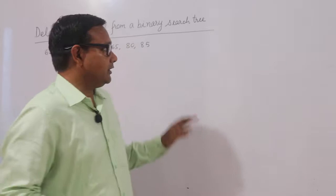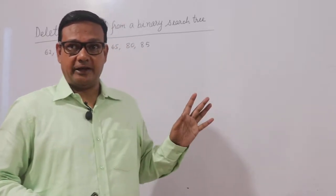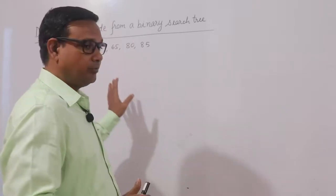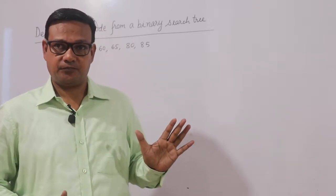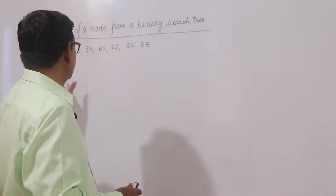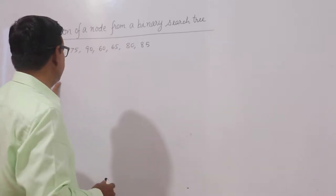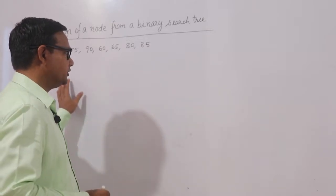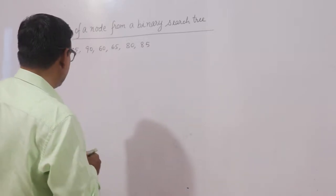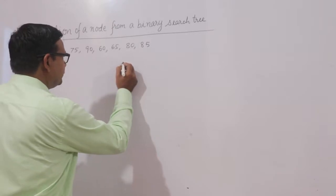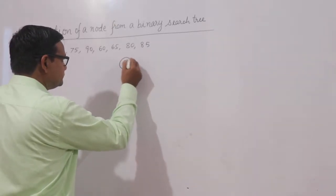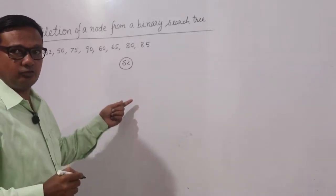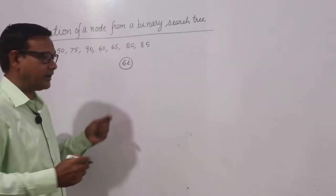I will explain how to delete a node from a binary search tree. Some nodes are given; first I will create a binary search tree using these nodes. 62 is given, so 62 will be the root node. Then 50 — 50 is less than 62, so it will be the left child of 62.